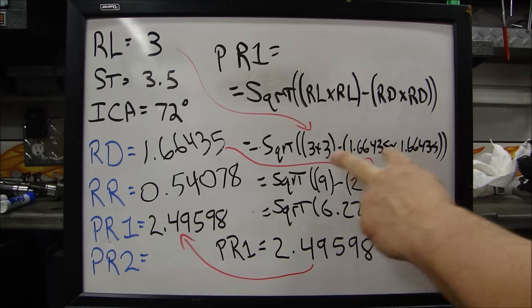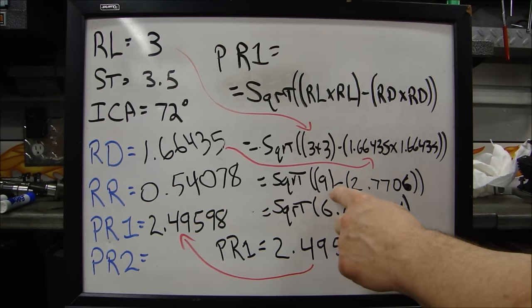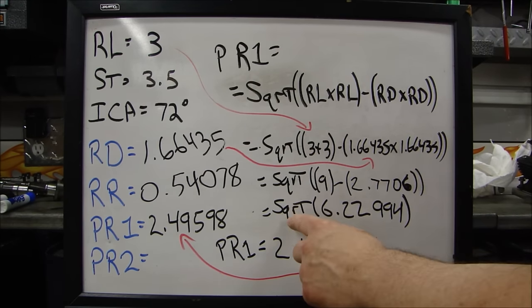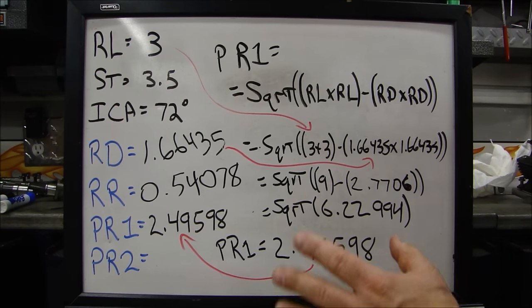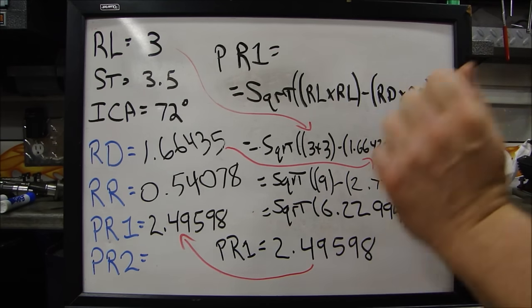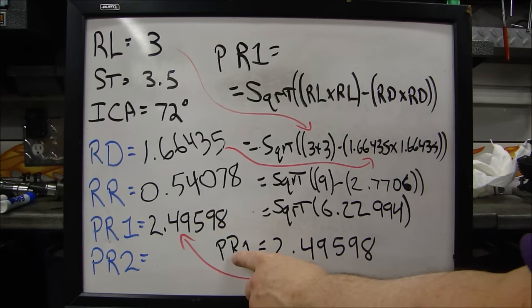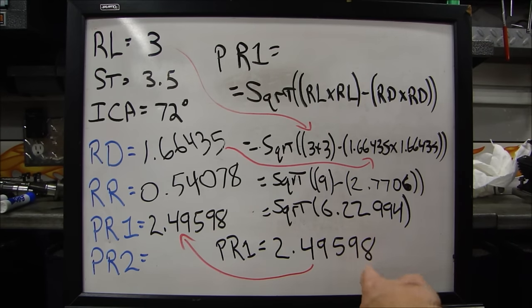So that comes out to the square root of 3 times 3 minus 1.66435 times 1.66435. Double parenthesis. You know you do these operations separately. That's the square root of 9 minus 2.7706. So we got the square root of 6.22994. Again, remember, don't truncate your numbers. Use every number in the decimal. Our PR1 for this equals 2.49598.